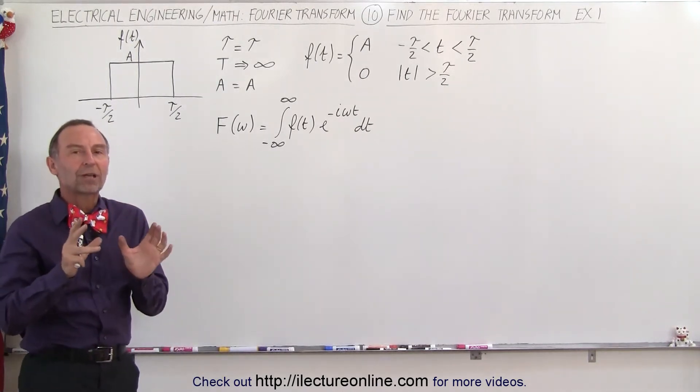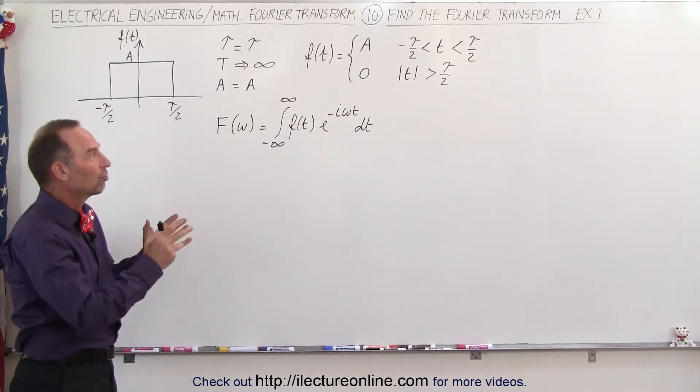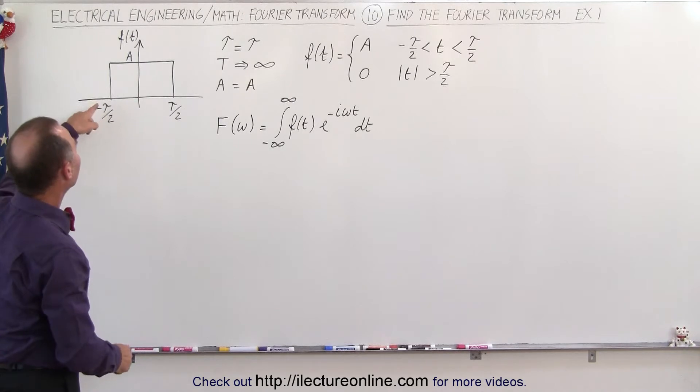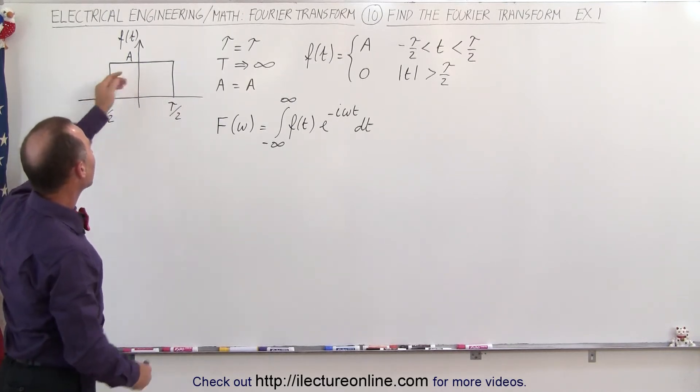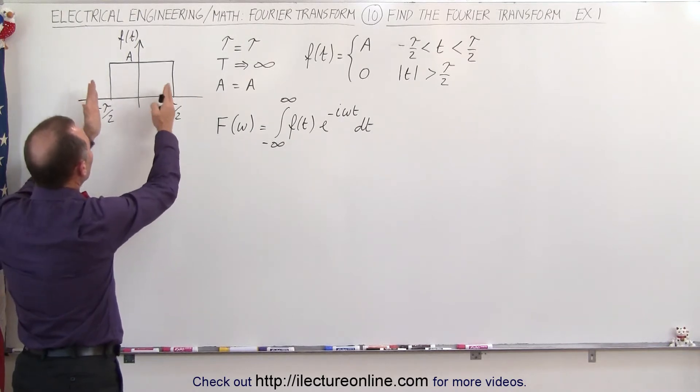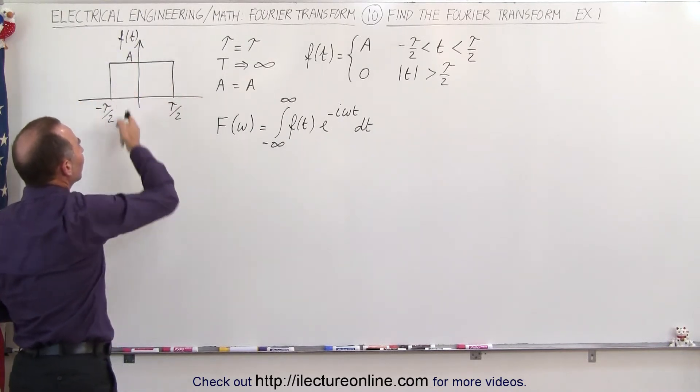But now let's go ahead and try to work out the Fourier transform of some simple transformations. So here we have a single pulse input with an amplitude of A and a pulse width of tau so that it's equally divided over the f of t line, the vertical line here.